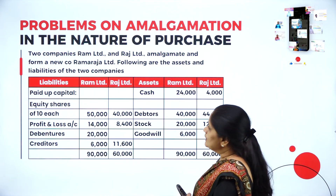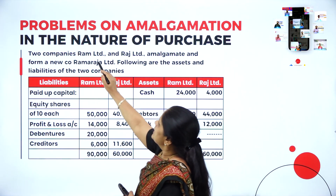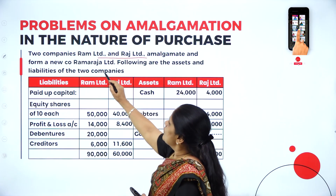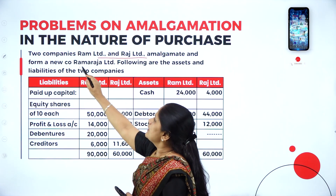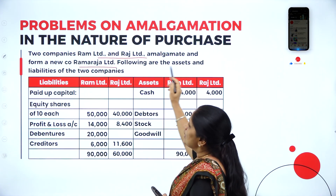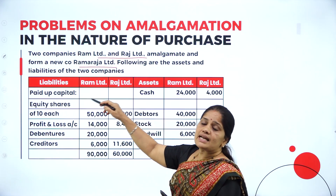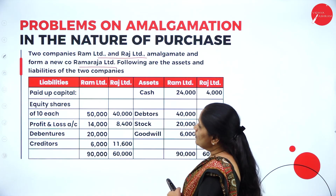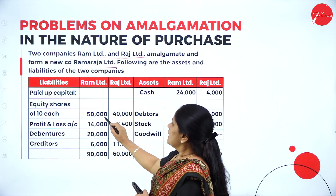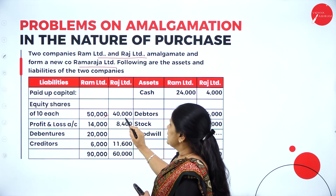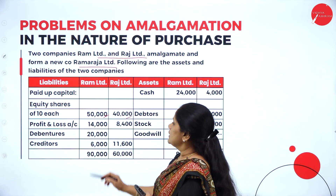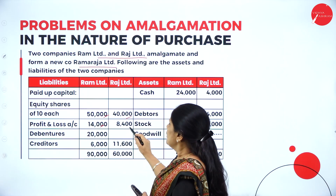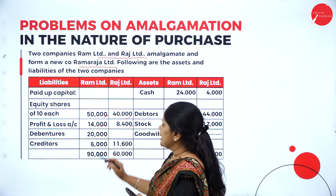We have a problem here. The two companies Ram Limited and Raj Limited amalgamate and form a new company Ramaraja Limited, and following are the assets and liabilities of the two companies. We have the liabilities here: Ram Limited 50,000, Raj Limited 40,000. Profit and loss account 14,000 and 8,400.